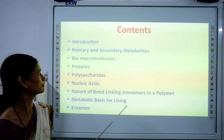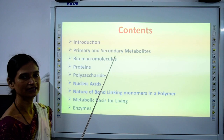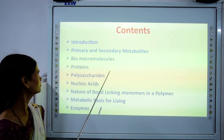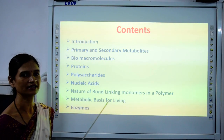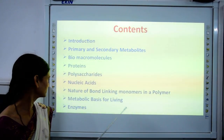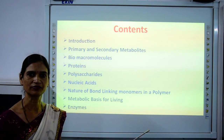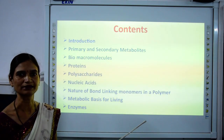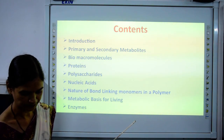The contents of this chapter will be: primary and secondary metabolites, biomacromolecules, proteins, polysaccharides, nucleic acids and the bonds present in them, the metabolic basis of life, and finally enzymes. All these things we will learn in this chapter.